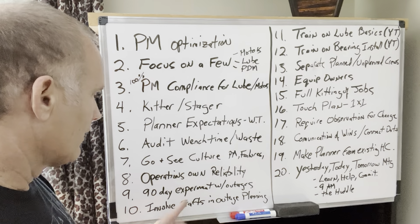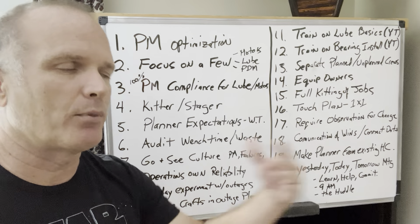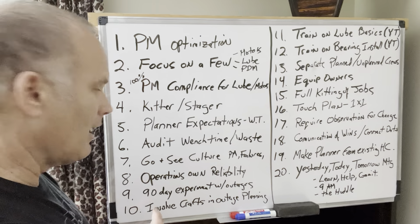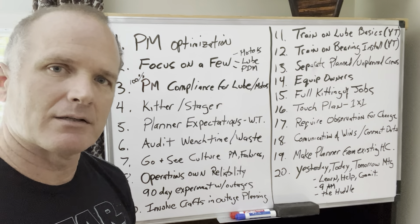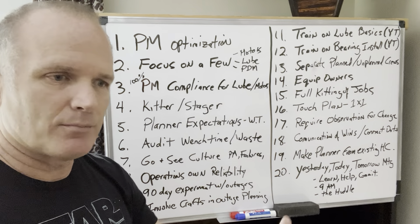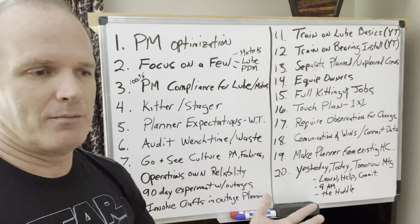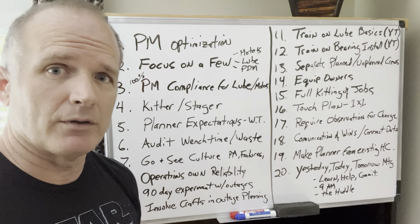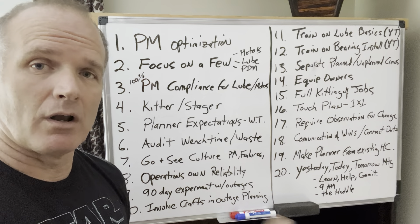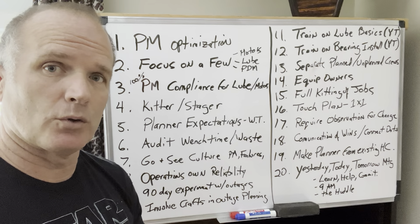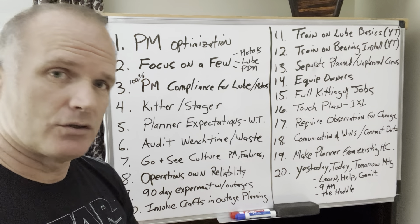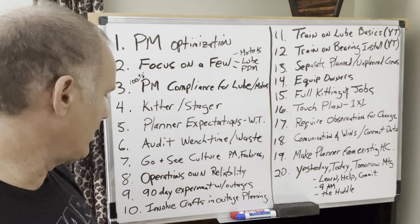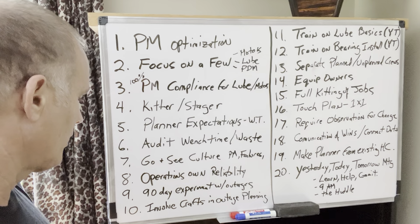Number nine: if your outages keep getting pushed out because of production demands, ask for a 90-day experiment. Say: for the next 90 days, let's have our outages. Instead of needing to be 24 hours, commit to doing them in 18 hours — I'm going to train my crew like an Indianapolis pit crew to do them more efficiently. But let's have them on the schedule that maintenance and reliability people recommend. A 90-day experiment.